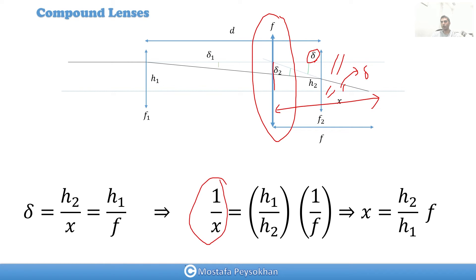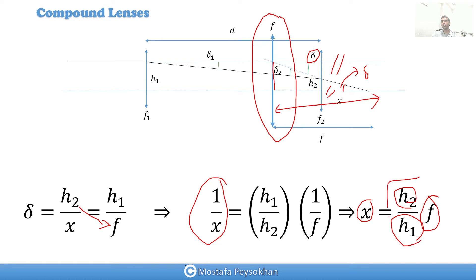From the equation h2 over x equals h1 over f, we can solve for one over x: one over x equals (h2 over h1) times one over f. Therefore x itself equals (h2 over h1) times f. The main question now is: what is h2 over h1?